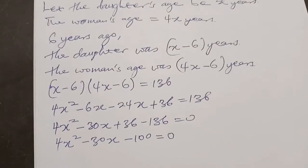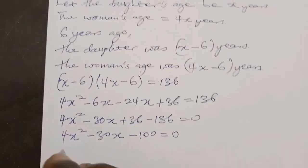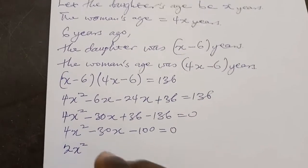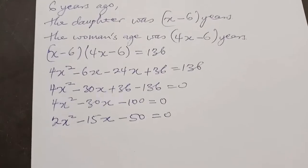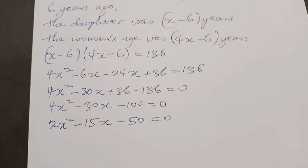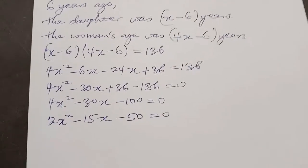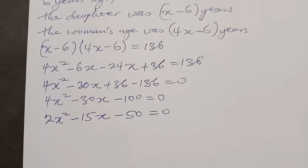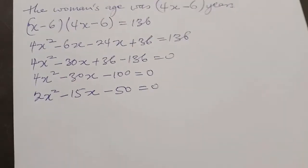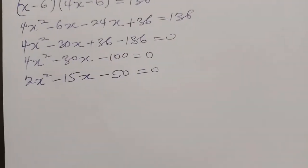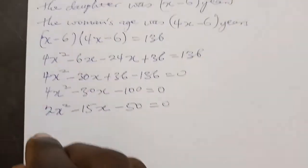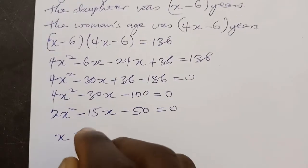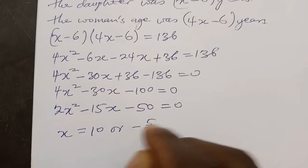There is a common factor — 2 can divide all terms — so this gives us 2x squared minus 15x minus 50 equals 0. We need to solve this quadratic equation. I have a number of videos on how to solve quadratic equations using different methods, so if this is a challenge you can go back and watch one of them. You can also use a calculator. When you solve this equation, you get x equals 10 or negative 5 over 2.